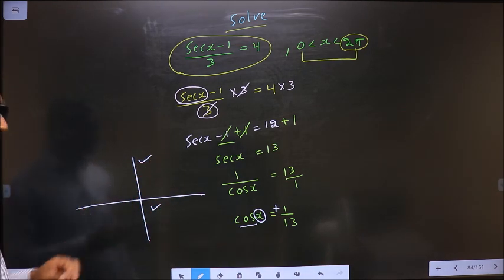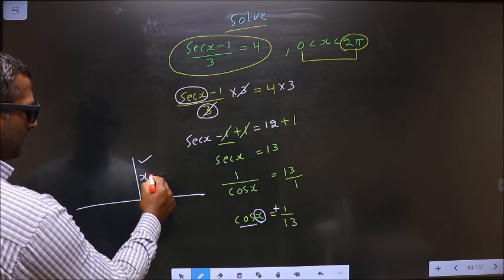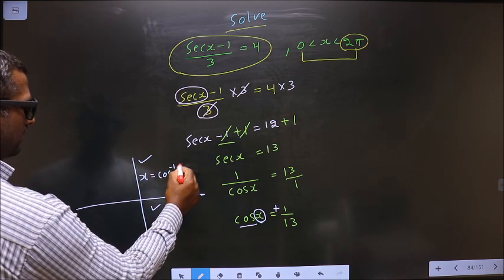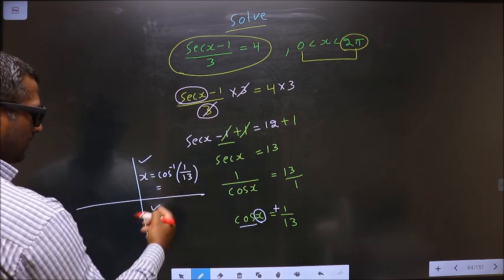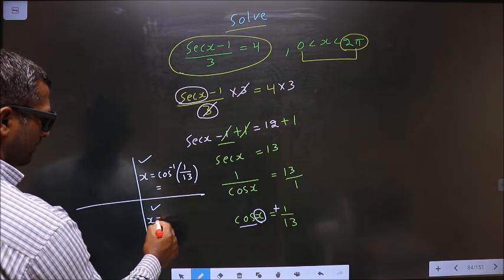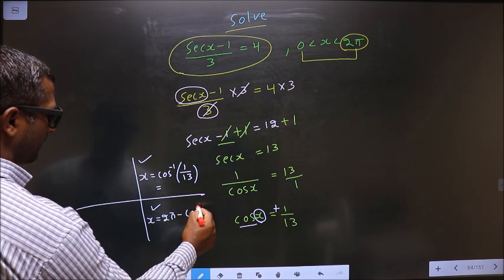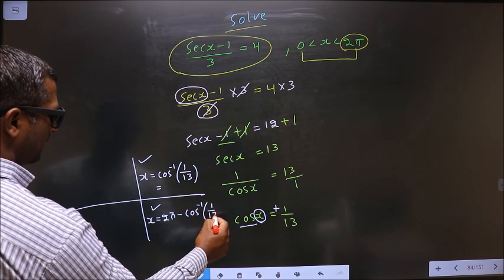To get an angle in the first, we do directly cos inverse 1 by 13. To get an angle in the fourth, we should do 2 pi minus cos inverse 1 by 13.